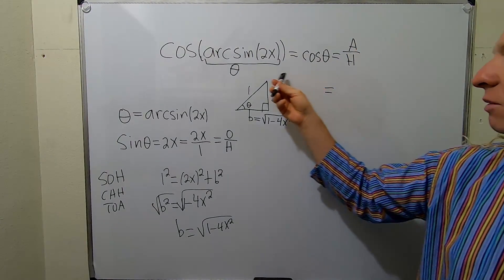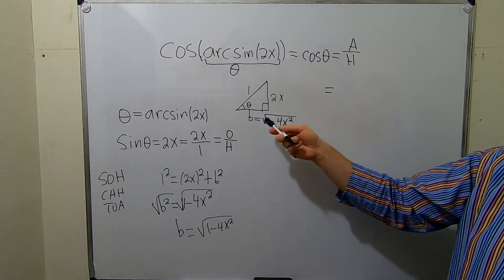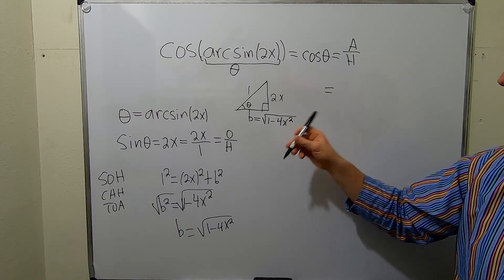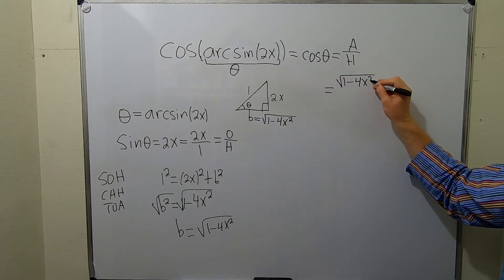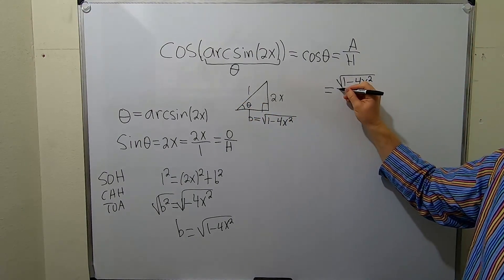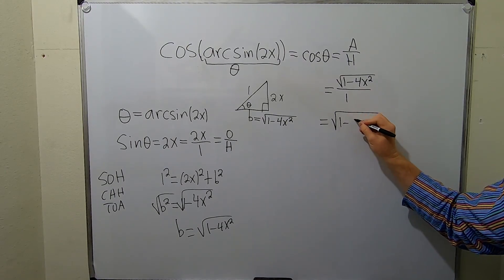But now we've completely solved this triangle. We have all the sides, at least. And so adjacent is going to be this one, square root of 1 minus 4x squared. And then our hypotenuse is just 1, so over 1. And so we end up with square root of 1 minus 4x squared.